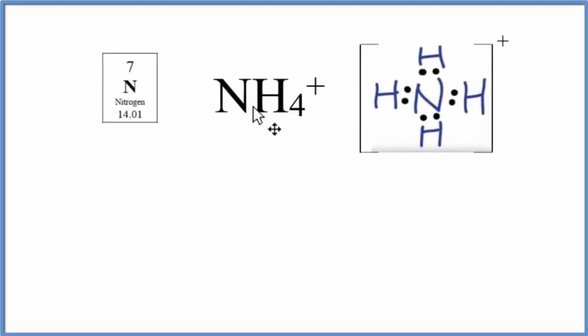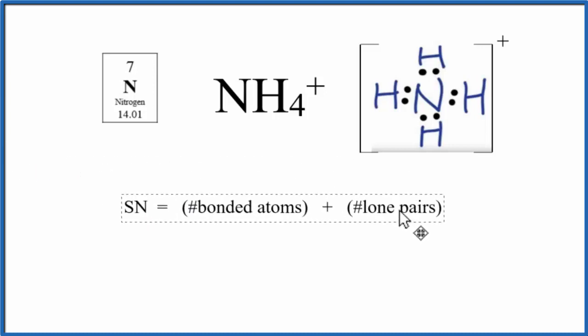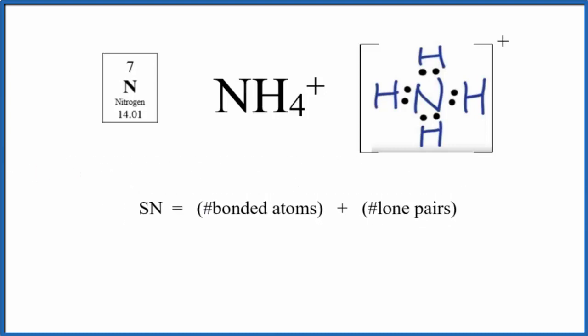To find the hybridization for the nitrogen here in NH4 plus, the ammonium ion, we use the Lewis structure here and we'll first find the steric number. This is kind of the fast way to do it. So the steric number, that's the number of bonded atoms, hydrogens, those are bonded atoms, and then lone pairs.